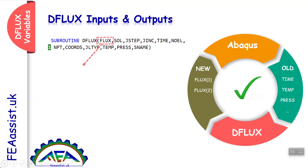We need to well understand this interaction to write good DFLUX subroutines. For example, flux 1 is actually the derivative of temperature with respect to x, and flux 2 is the derivative of flux with respect to temperature. It is written based on your formulation.